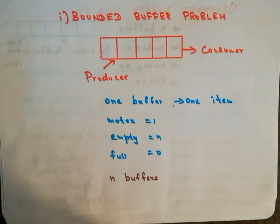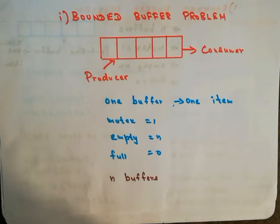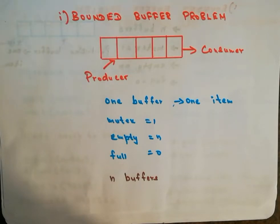For a real-time example of the bounded buffer problem or the producer-consumer problem, one example is the compiler and the assembler. The compiler converts the high-level language program into assembly language code and feeds it to the assembler. So here the compiler is the producer and the assembler is the consumer.